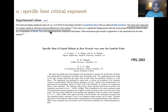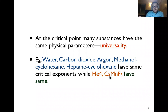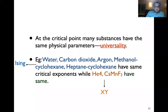Many materials share the same critical exponents: not just water, but also carbon dioxide, argon, ethanol, and cyclohexane — they all have the same critical exponents. Helium-4 and cesium manganese fluoride have different critical exponents and form another universality class called the O(2) universality class — the Ising and the XY or O(2) universality classes.